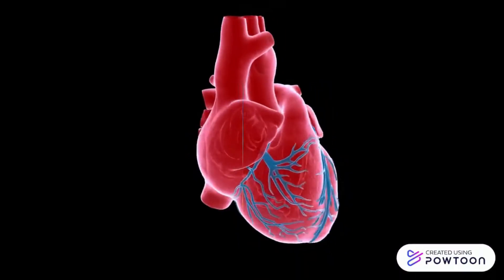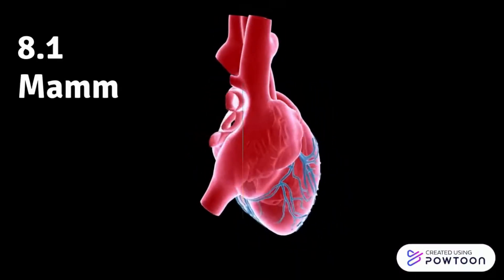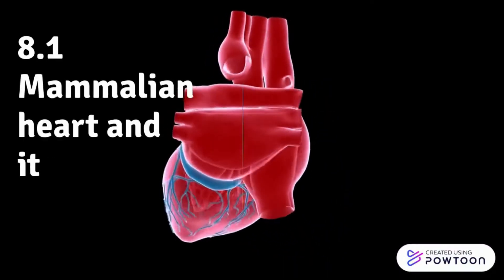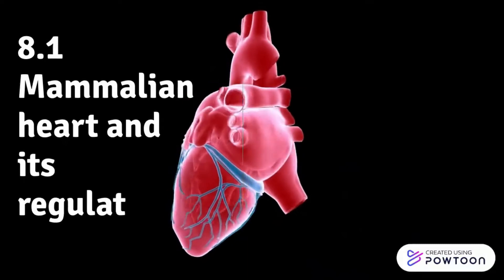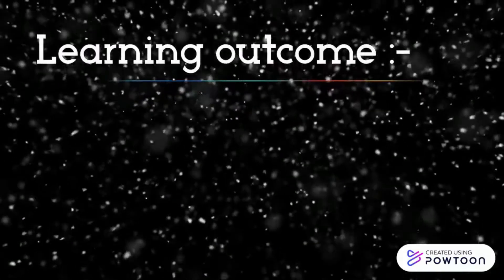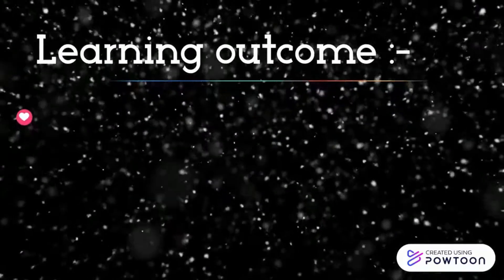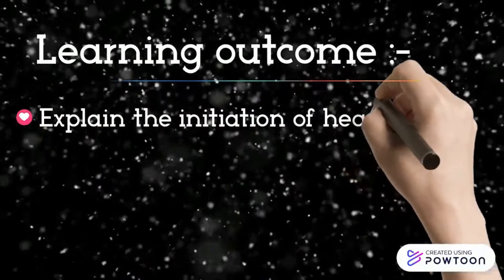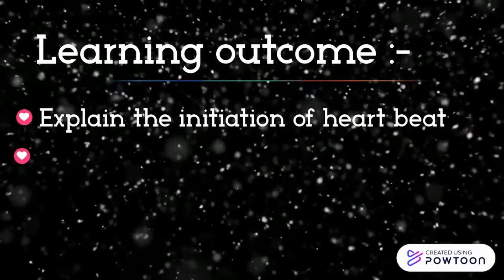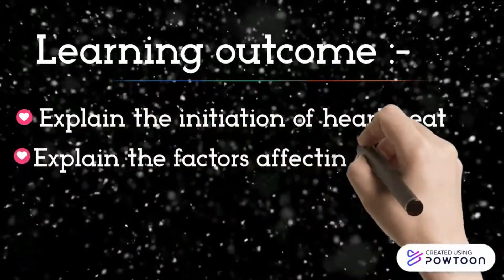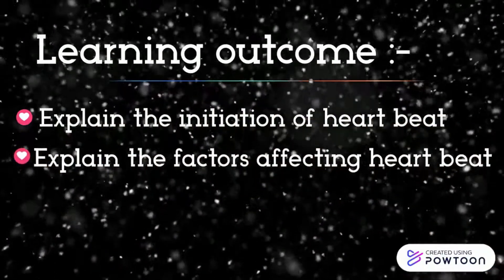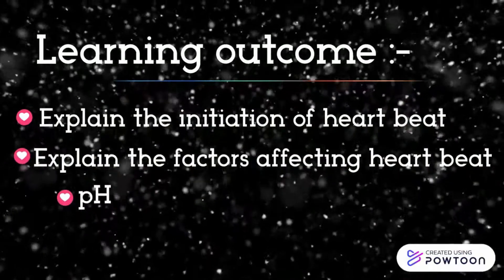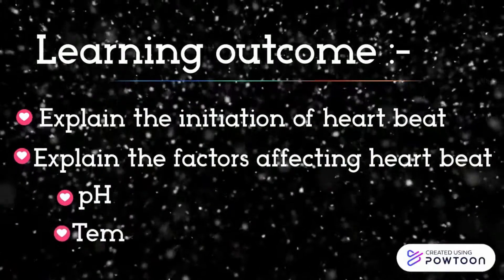8.1 Mammalian Heart and Its Regulation. Learning Outcome: First, explain the initiation of heartbeat. Second, explain the factors affecting heartbeat, which are pH and temperature.